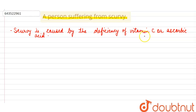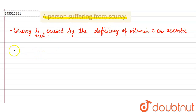Vitamin C is an essential dietary nutrient. It plays an important role in the development and functioning of several body processes. Now, a person suffering from scurvy will show the following symptoms. The person will be anemic — anemia is a condition in which blood lacks enough RBCs or hemoglobin.